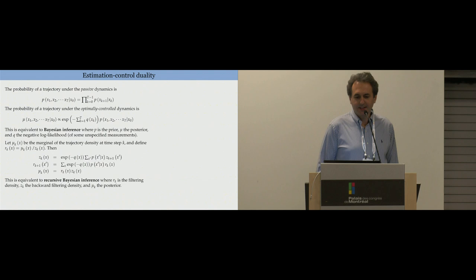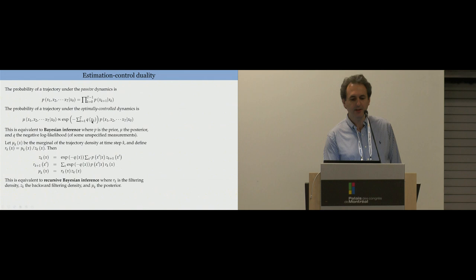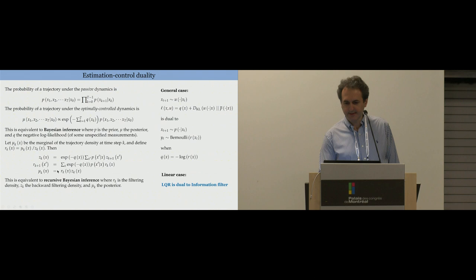This class of problems gives rise to a very nice estimation control duality. The probability of a trajectory under the passive dynamics is just obviously that. You can show that the probability under the optimally controlled dynamics is the same thing weighted by the products of these exponentiated state costs. So solving optimal control here is equivalent to Bayesian inference where the passive dynamics acts like the prior, this thing is your posterior, and this Q, which is your state cost, is the negative log likelihood of some unspecified measurements. We can also have a filtering view where this z-function goes backwards in time, like a backward filtering density. This function R behaves like a forward filtering density, and the product is the marginal at a given state.